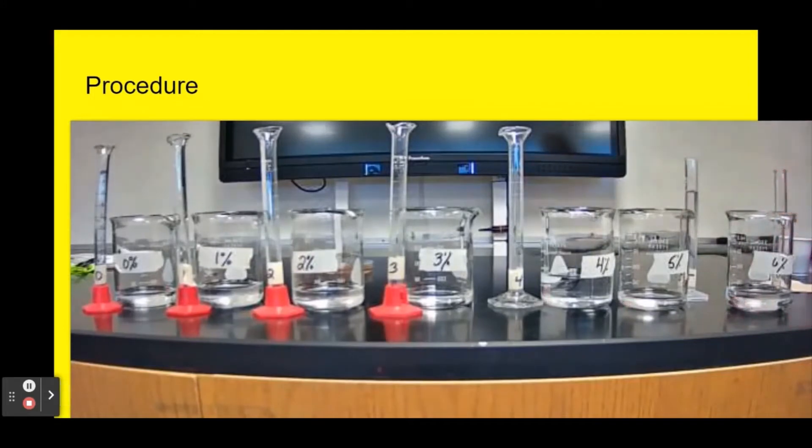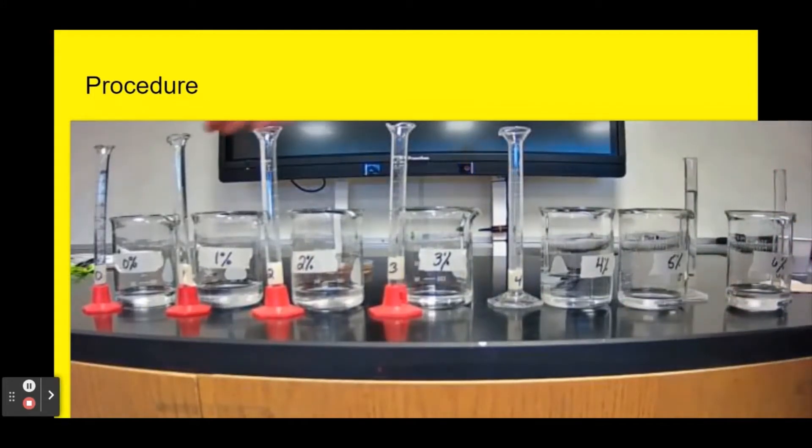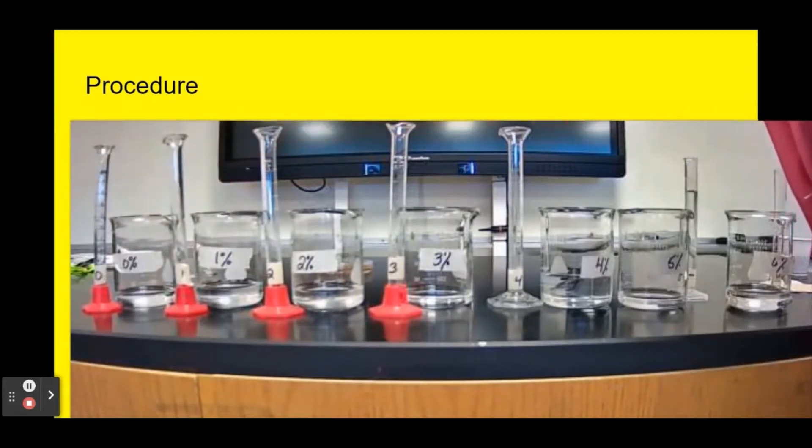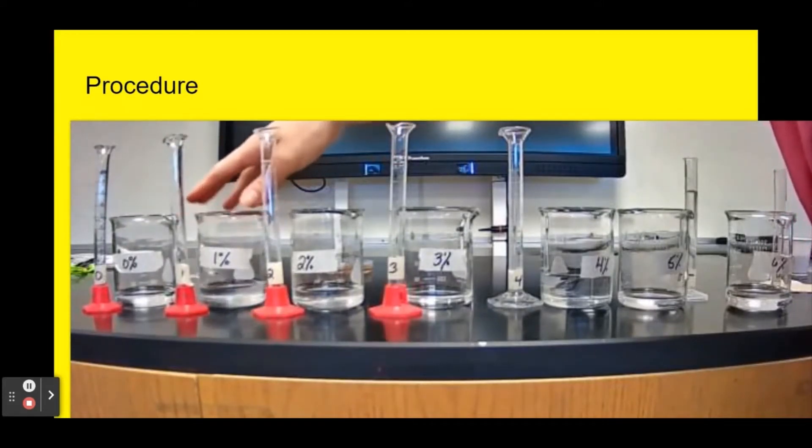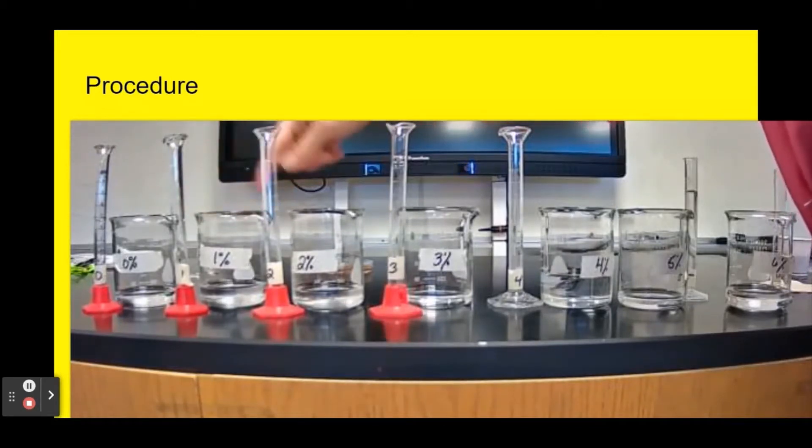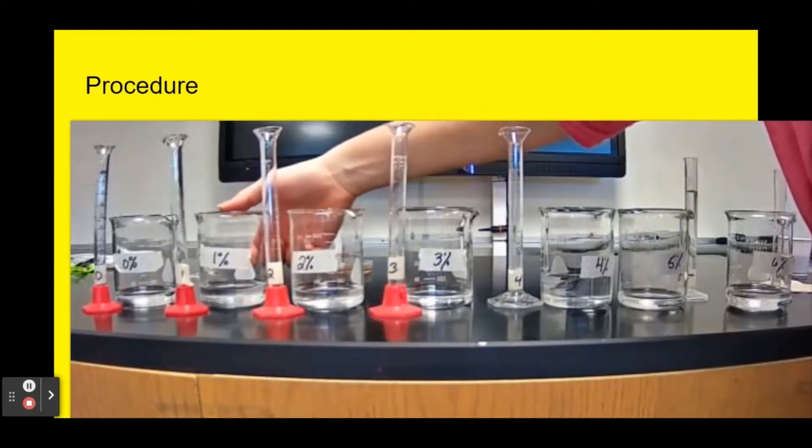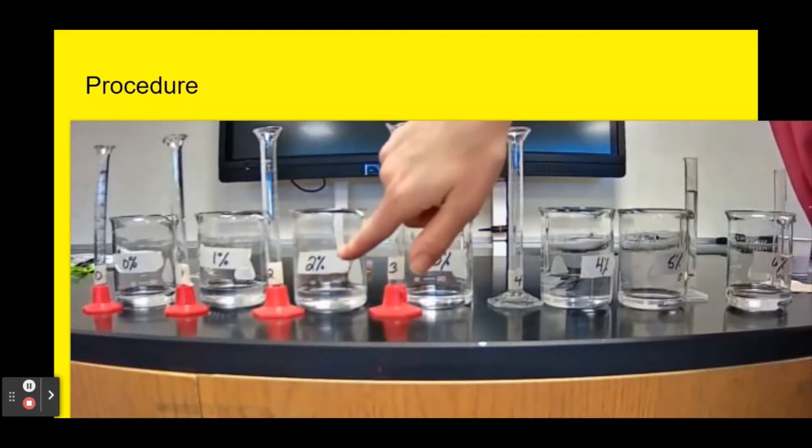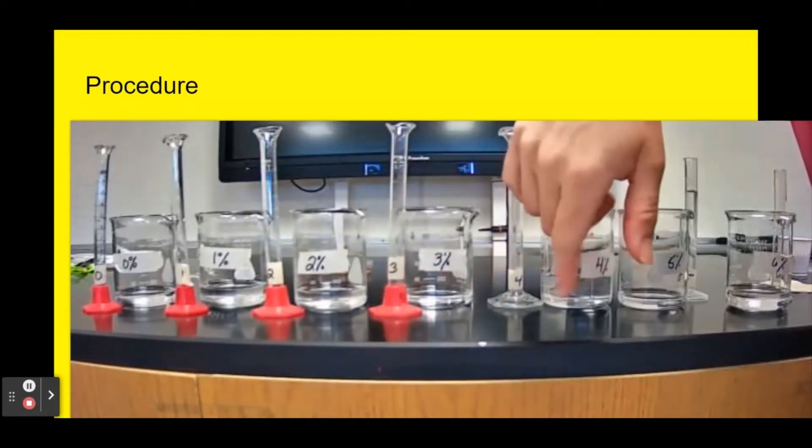I have now my setup where I've got all my different percentages of acid. This one is 0% acid, 100% water. This one would be made with 99 milliliters of water and 1 milliliter of acid, 98 milliliters of water, 2 milliliters of acid. You get the idea.